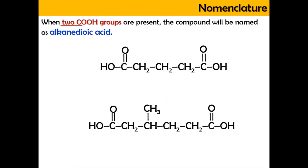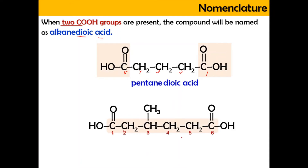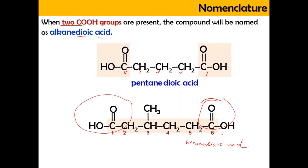When 2 COOH groups are present, the compound will be named as alkandioic acid. For example, if you have one carboxyl group at one end and another carboxyl group at the other end, and the chain has 1, 2, 3, 4, and 5 carbons, this is pentanedioic acid. Similarly, if the structure has 1, 2, 3, 4, 5, 6 carbons with 2 carboxyl groups, it is hexanedioic acid, and at carbon number 3 it is attached with a methyl group, so it becomes 3-methylhexanedioic acid.